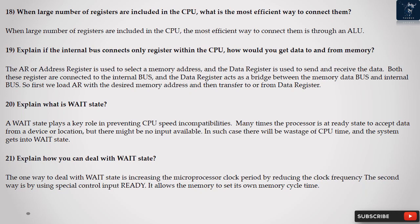Question 19: Explain if the internal bus connects only register within the CPU, how would you get data to and from memory? The AR or address register is used to select a memory address, and the data register is used to send and receive the data. Both these registers are connected to the internal bus, and the data register acts as a bridge between the memory data bus and internal bus. So first we load AR with the desired memory address and then transfer to or from data register.